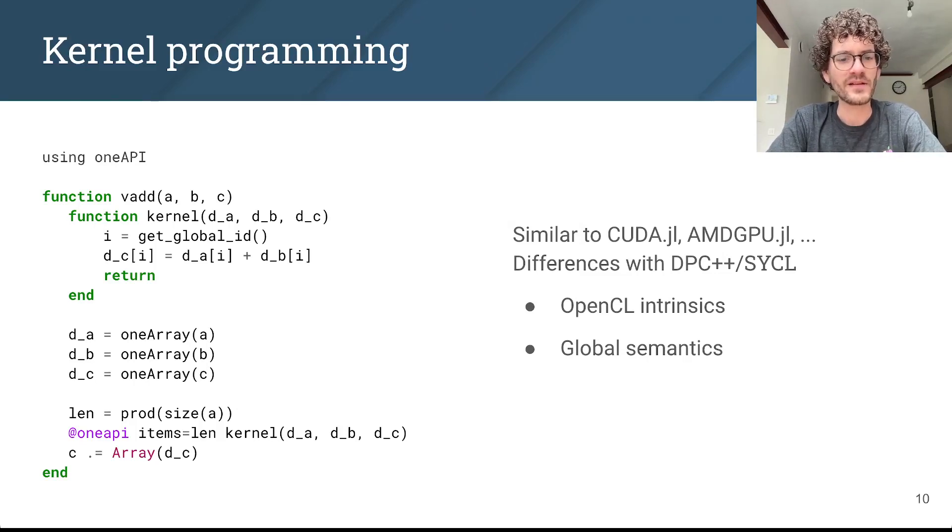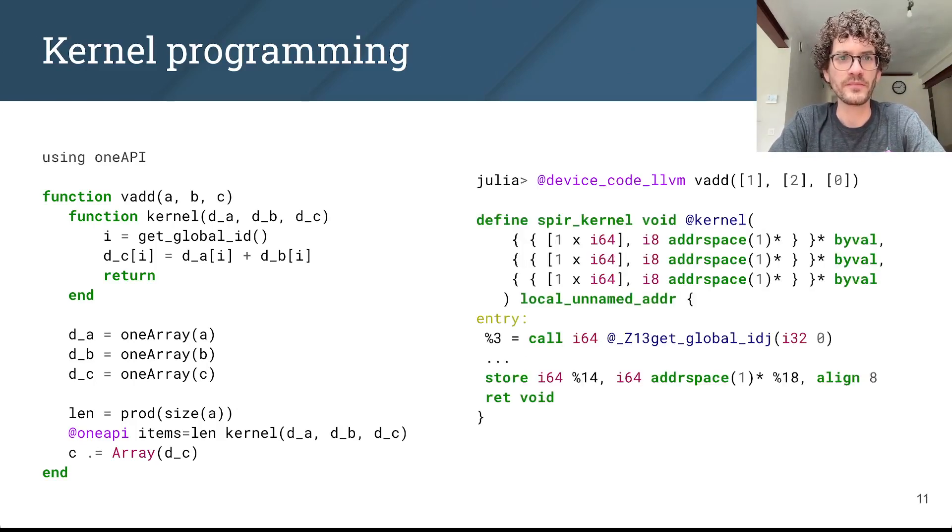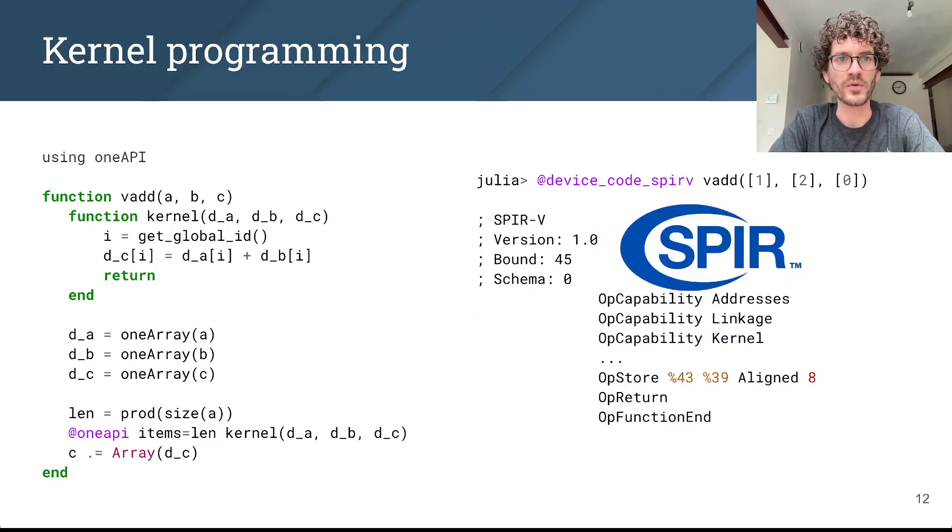And these differences are deliberate. We've made them so that programming oneAPI kernels in Julia is fairly similar to programming kernels in other GPU backends like CUDA.jl or AMDGPU.jl, which makes it easier for people who have worked with these packages before to start using oneAPI.jl. We also have the same macros you are used to in other GPU packages, for example, to inspect the generated LLVM IR or to have a look at the generated SPIR-V code.